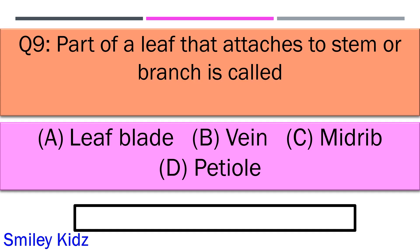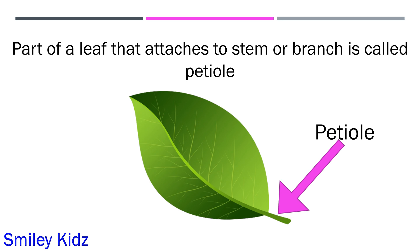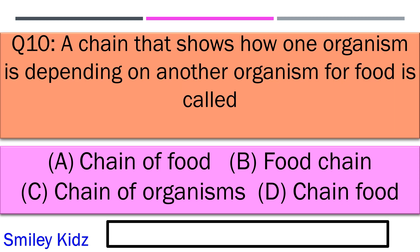The part of a leaf that attaches to your stem or branch is called option A leaf blade, option B vein, option C midrib, and option D petiole. Your time starts now. And your time is up and the right answer is option D petiole.